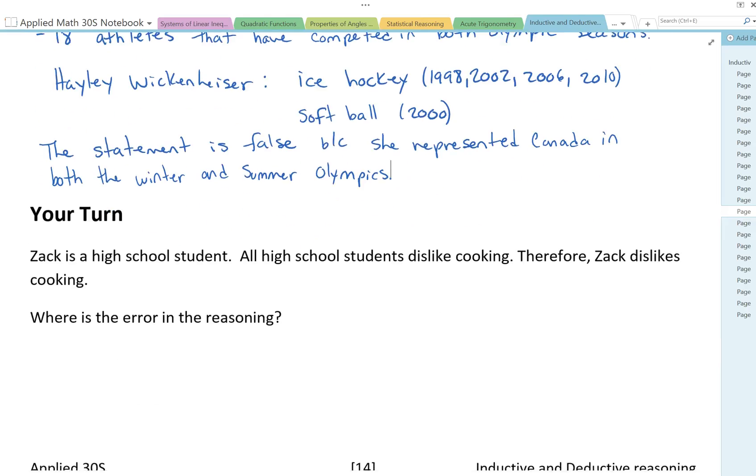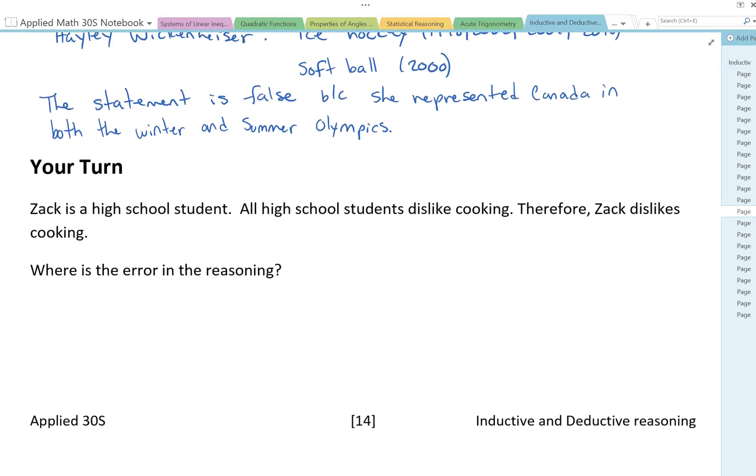Here's another example. Zack is a high school student. All high school students dislike cooking, therefore Zack dislikes cooking. Where is the error in the reasoning? The error is actually in the second statement. All high school students dislike cooking. We know that not all high school students dislike cooking. There must be some high school students that like cooking. If that statement's false, then that makes our entire statement false. If there's a false assumption in your conjecture, then that means your entire conjecture is false.